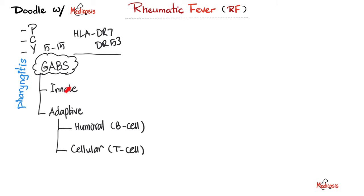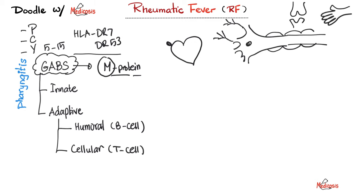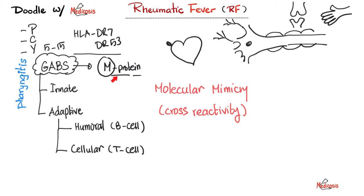How does the immune system start attacking the heart, joints, nervous system, and skin? Group A beta-hemolytic Streptococcus has a matrix protein — the M protein — which is virulent. The M protein is the target the immune system tries to attack. However, this M protein looks very similar to proteins on the heart, nervous system, joints, and skin. So the immune system attacks these tissues instead — a phenomenon called molecular mimicry or cross-reactivity.